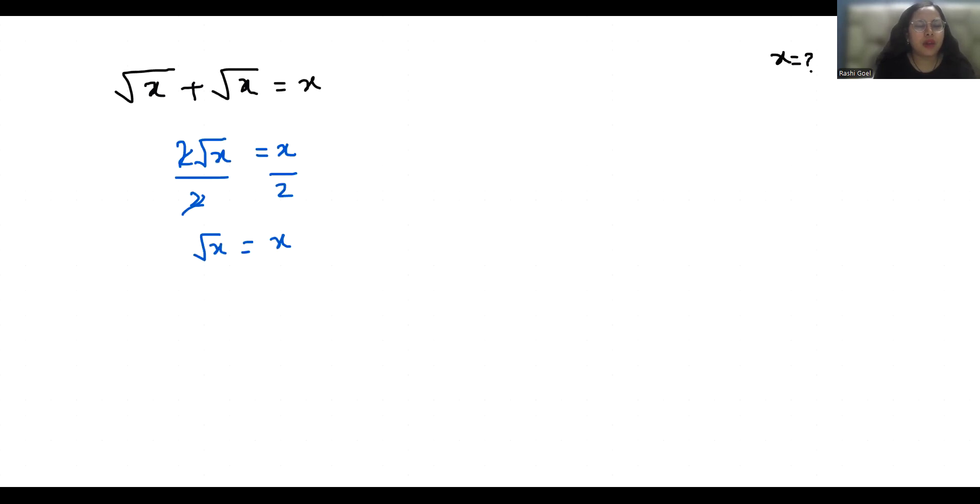Now I am going to square both sides. With the help of this square, the square root removes. So x = x²/4.